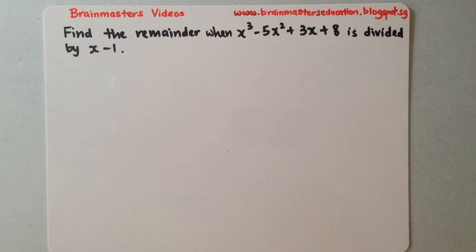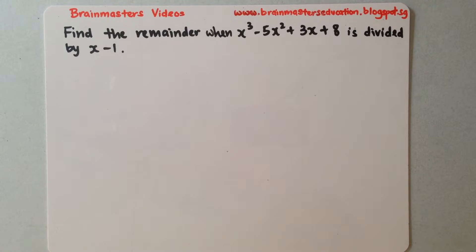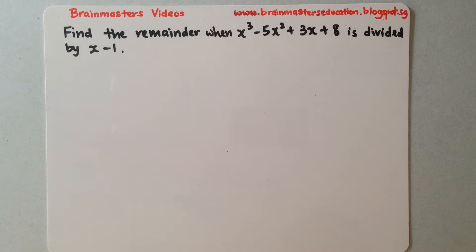Hi, welcome to Playmaster's videos. Today I will be doing the remainder theorem by long division. So let's look at the question. Find the remainder when x cubed minus 5x squared plus 3x plus 8 is divided by x minus 1.